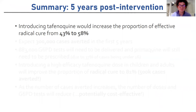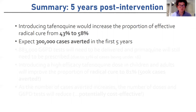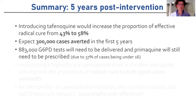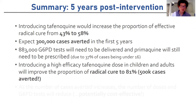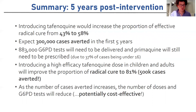In summary, five years after the introduction of tafenoquine in Brazil, we estimate this would increase the proportion receiving effective radical cure from 43% to 58%. In total we expect this will lead to 300,000 cases averted in the first five years, though this would require an estimated 880,000 G6PD tests. If we can introduce high-efficacy tafenoquine — either by higher dose or by expanding tafenoquine to the younger age group in children — then we can increase the proportion receiving radical cure to 81%, which could lead to half a million averted cases. As the number of cases averted increases, transmission will come down, and the number of doses and G6PD tests required will reduce, which can potentially improve the cost-effectiveness of this regimen.